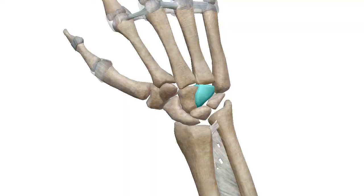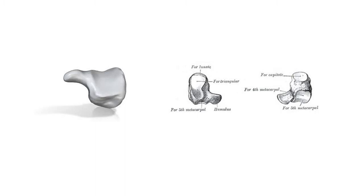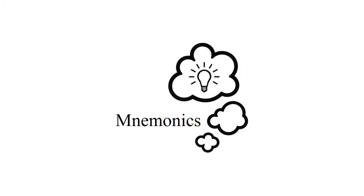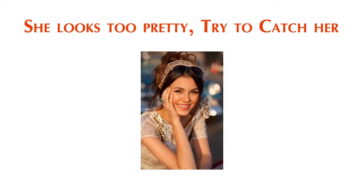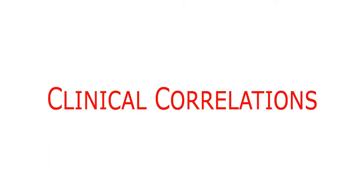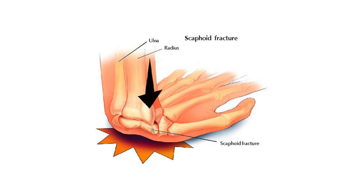The medial-most bone is the hamate bone, which is a hook-shaped bone. To help remember the names and positions of the carpal bones, a simple mnemonic may be used: "She Looks Too Pretty, Try To Catch Her." The first letter of each word corresponds to the first letter of each bone, proceeding lateral to medial — the first four are proximal and the last four are distal.